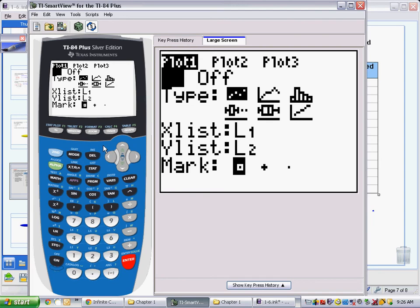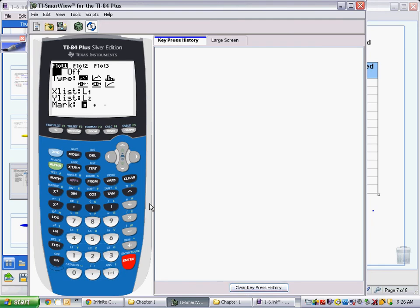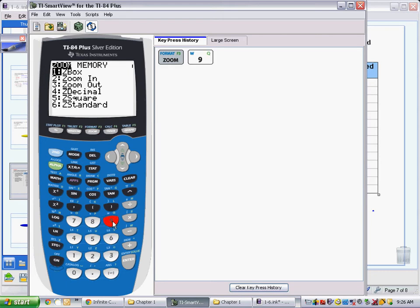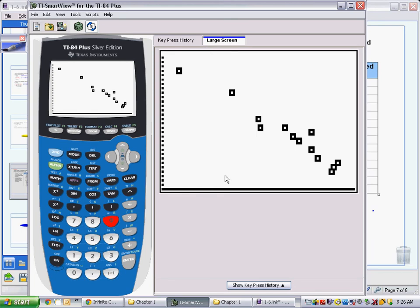Instead of pressing the graph key, however, I am going to tell my calculator to zoom the graph directly to the data set. This is done by selecting the zoom button and number 9, which is zoom stat. And we can see all my data show up on the screen.